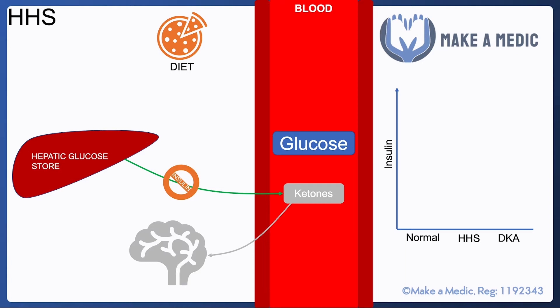I'm going to start off by reiterating the functions of insulin, and there are two main functions you need to be aware of. First, it reduces serum glucose concentration by pushing it into surrounding tissues and into the hepatic glucose store. The second function is that it switches off ketone production. Importantly, the levels of insulin required to do each of these functions differ — a certain amount is required to suppress ketone production, and a higher level is required to reduce glucose concentration.